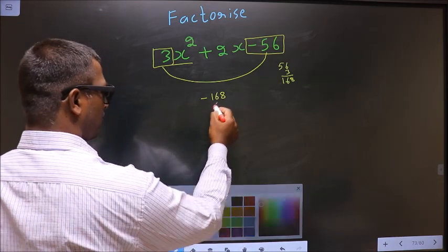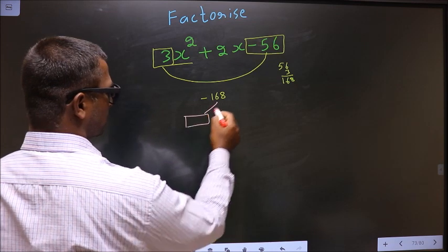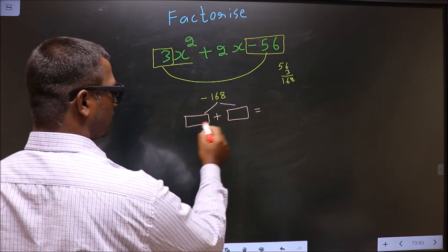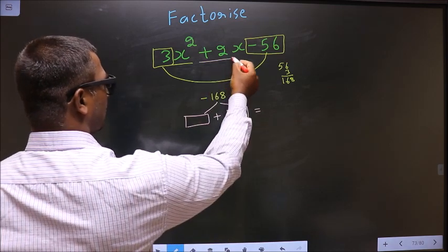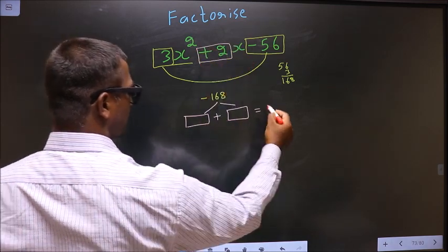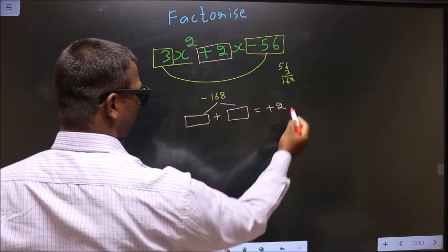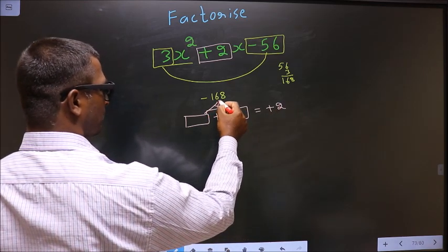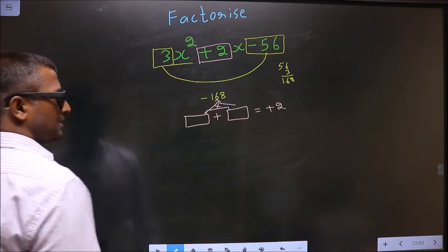Now you should look for two numbers such that when you add them, you get the middle coefficient, which is +2, and when you multiply them, you get -168.